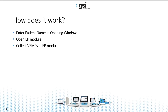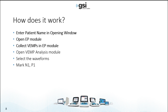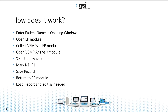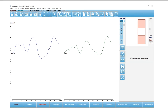So how does it work? You're going to launch the Audera Pro software and enter the patient name from the opening screen. Then you're going to launch the EP module and collect your VEMPs. Once you're done, open the analysis module, select the waveforms you want to analyze, mark the N1 and P1, save the record, go back to the EP module, and load the report. Then you're good to go for editing, etc. So that's the general flow.